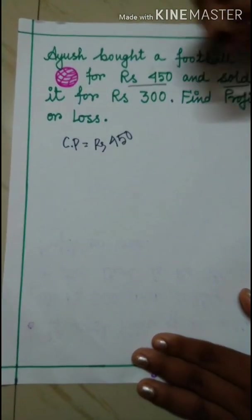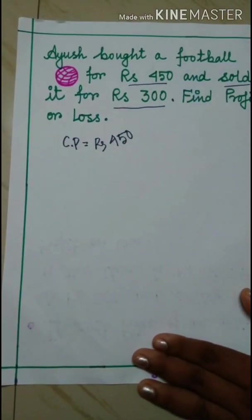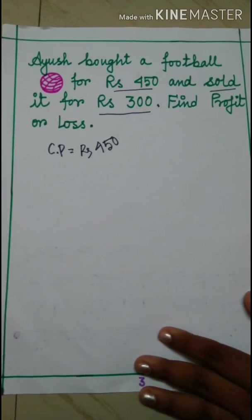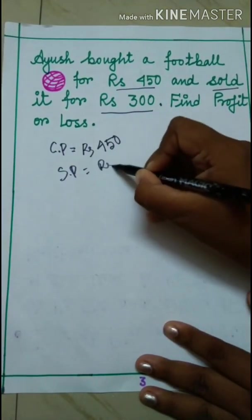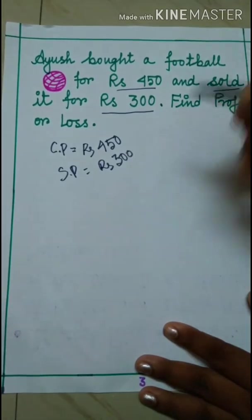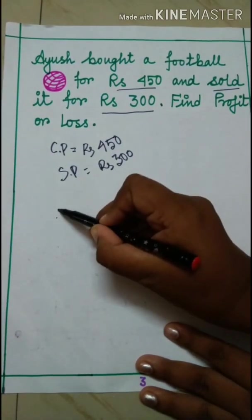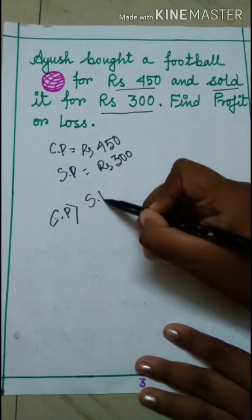And he sold it for Rs 300. That means the selling price of the football is Rs 300. And here we can see which is greater. Here CP is greater than SP.